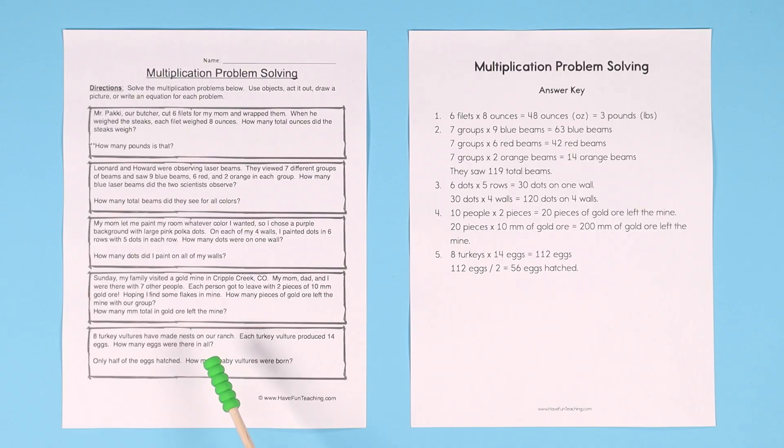This includes five different problems, each with fun things like food, laser beams, coloring your room, mining for gold, and turkey vultures laying eggs.